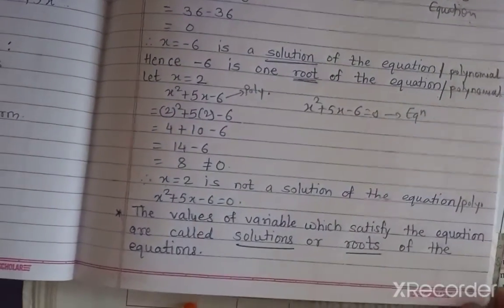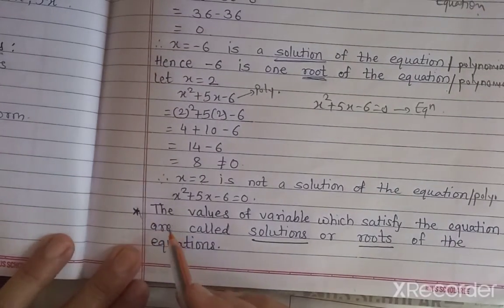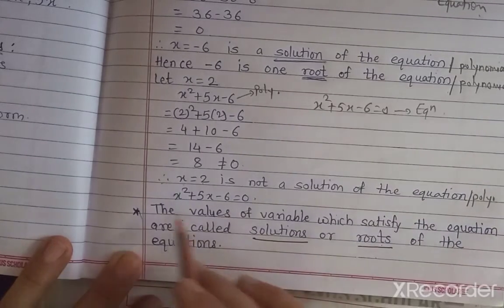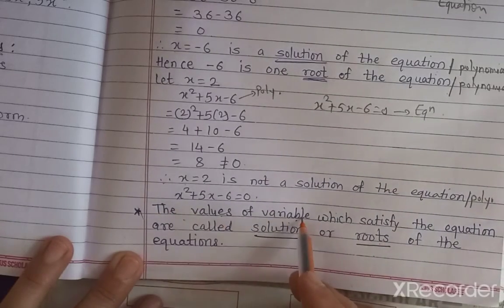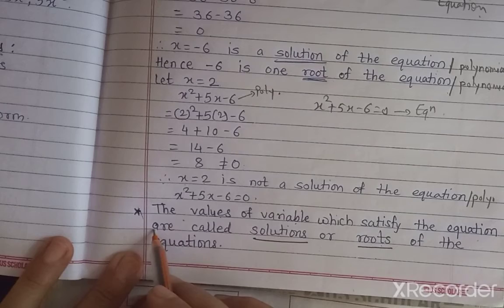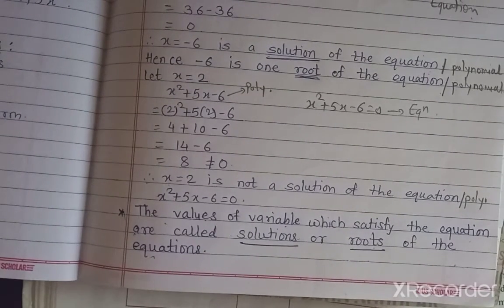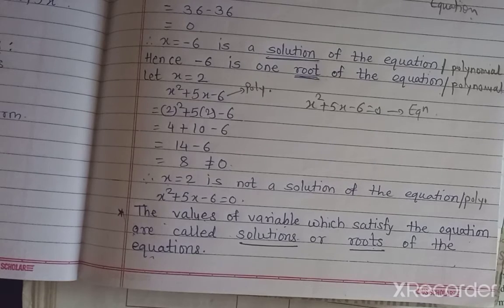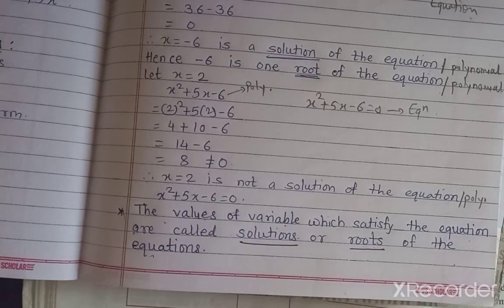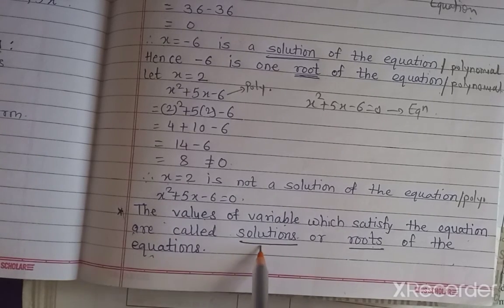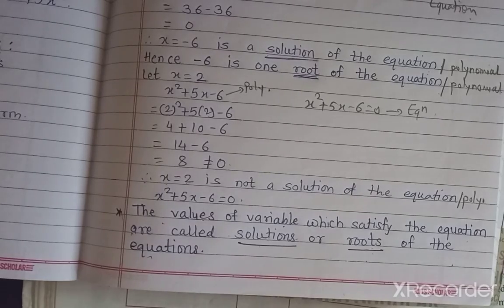From all these examples we conclude: the values of a variable which satisfy the given equation or polynomial are called solutions or roots of the equation. If a value is put in and the answer equals 0, or LHS equals RHS, then that value of the variable satisfies the given equation and is therefore a solution or root. Thank you, students.